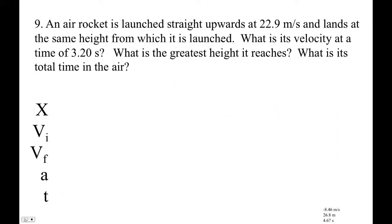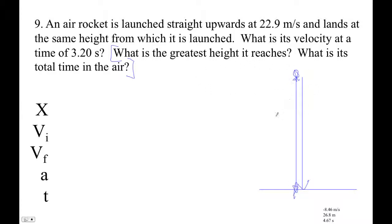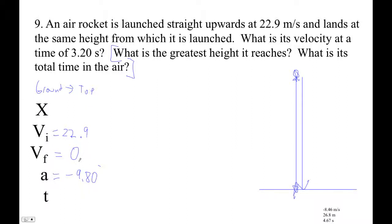Now let's do the greatest height and total time in the air. We're going to look at it from the ground to the top. When we figure out the time to the top, the total time will be twice that - that much time up, that much time down. Then we'll also figure out the greatest height. Acceleration is -9.8, initial velocity is 22.9, and the final velocity at the top is zero - because if it's not zero, it's not at the top.